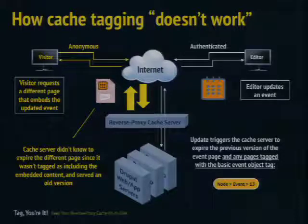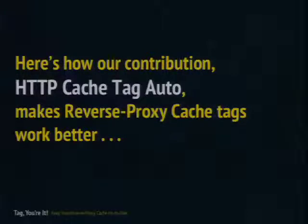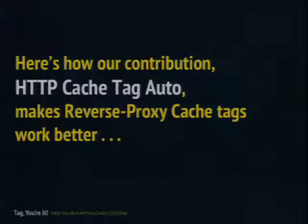We had to figure out how to deal with this issue. When we looked at modules like cache tags and how the expire module works, we saw we couldn't use anything that really exactly worked with core's caching API. There are a couple of reasons: we don't always cache everything in core, and there are a lot of things that aren't really cacheable — such as elements like what theme you're using. So we had to figure out another way. That's how we basically built HTTP Cache Tag Auto, which makes reverse proxy cache tags work a hell of a lot better.